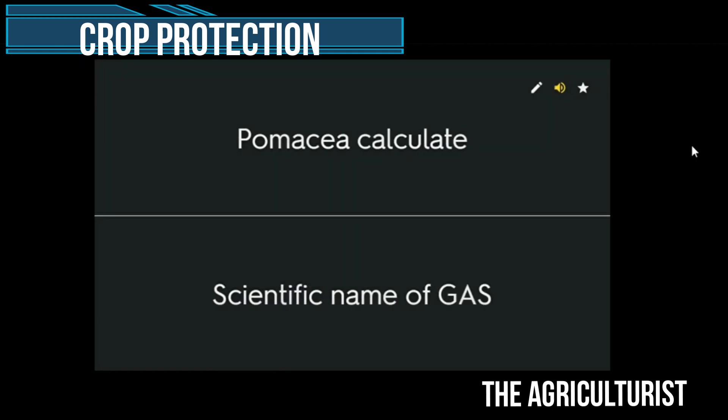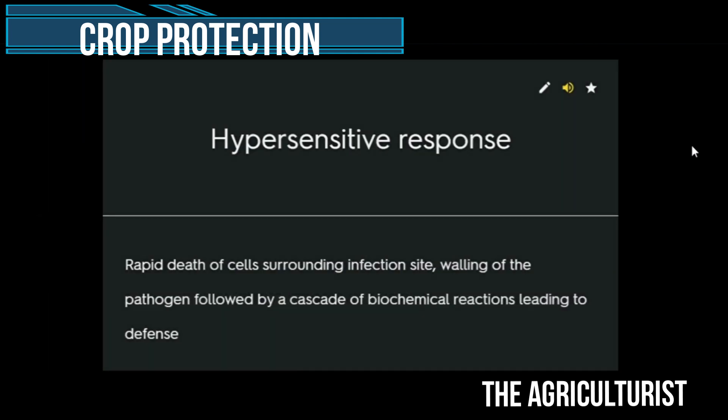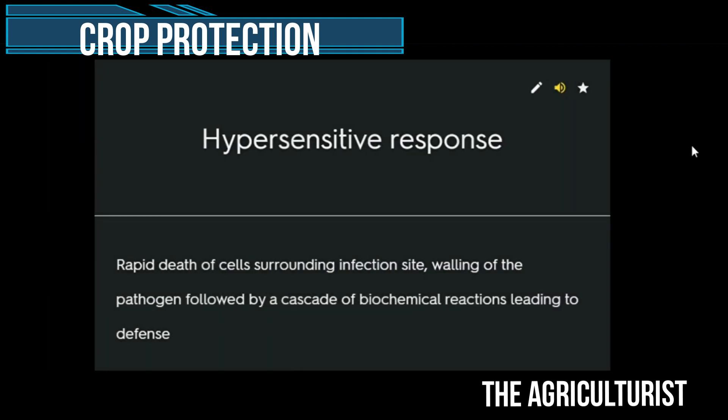Cultural method: control of disease through crop rotation falls under what method of control. Pomacea canaliculata — scientific name of GAS. Hypersensitive response: rapid death of cells surrounding the infection site, walling off the pathogen, followed by a cascade of biochemical reactions leading to defense.